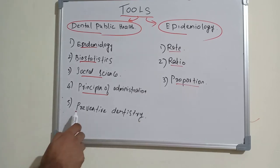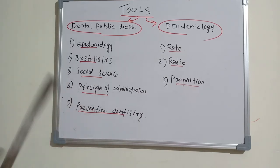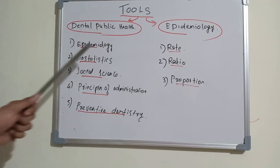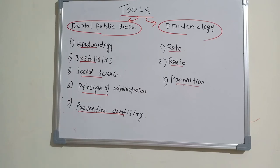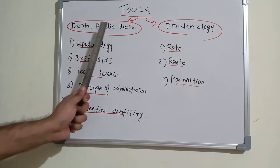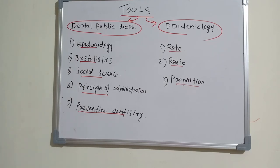The last tool is preventive dentistry — the ultimate goal is to reduce the burden of dental problems in the public. We conduct epidemiology to understand the problem, use biostatistics to reach conclusions, understand social aspects of people, apply proper administration, and finally perform preventive dentistry to prevent dental problems in the public. Those are the tools of dental public health.